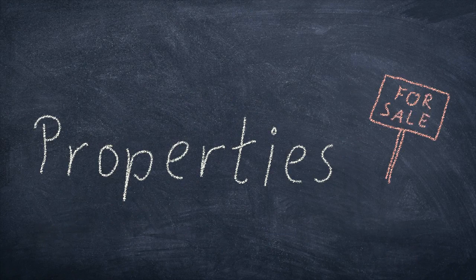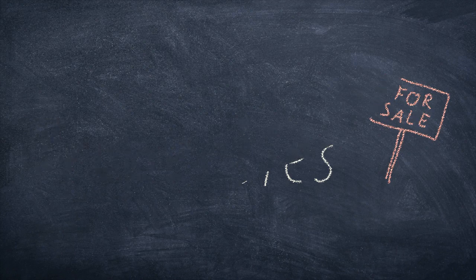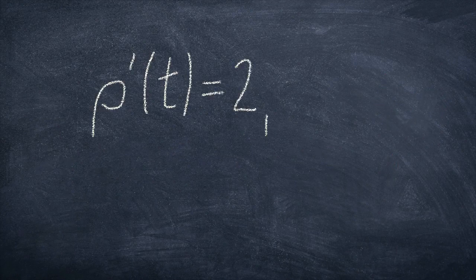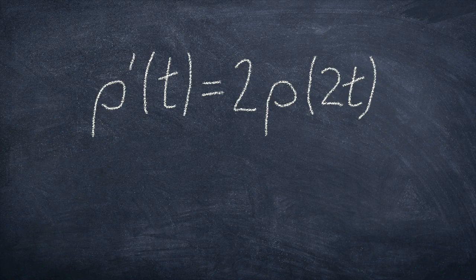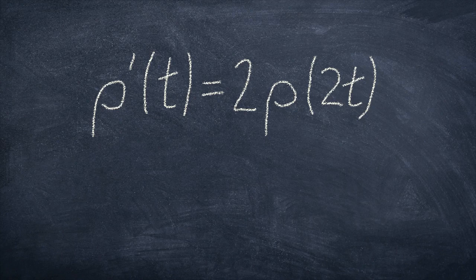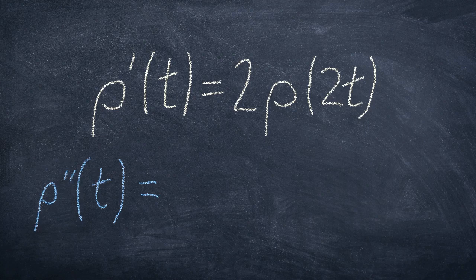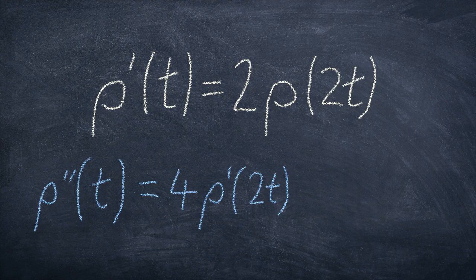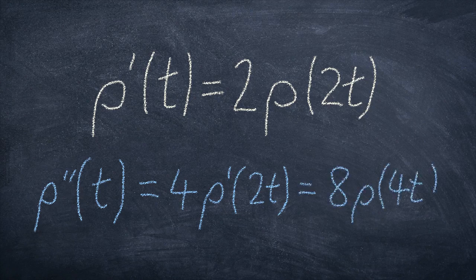Alright, now that the cat is out of the bag, let's discuss some properties of the row function. First, because of the way we set it up, it satisfies this equation. It is its own shrunk to half in time and doubled in amplitude derivative. And, of course, we can derive the next derivative from this by deriving the equation and plugging it into itself. So, we get a four from the chain rule, the inner two remains. And then we can replace row prime of t via the equation above, yielding eight row of four t. And we can just continue like this for all higher derivatives.